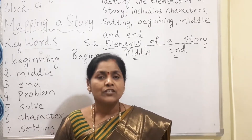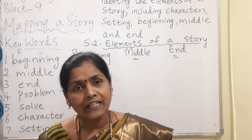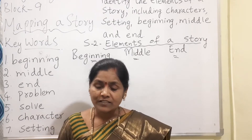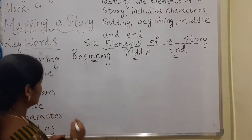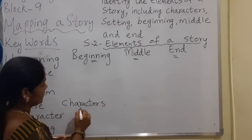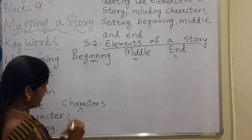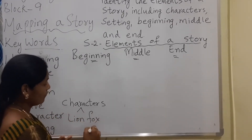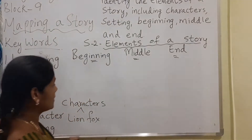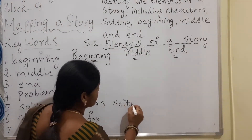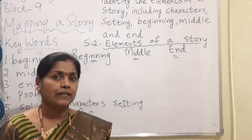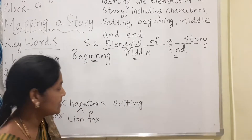Can you tell me who are the characters in this story? About whom the story is? The characters are the persons or animals who are there in the story. They are the lion and the fox. And where did the story take place? Where it has taken place is called the setting. Setting means the place where the story has taken place. Where is that place? It is the jungle.